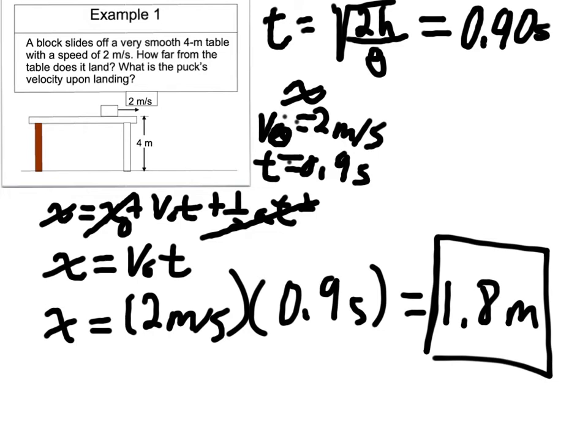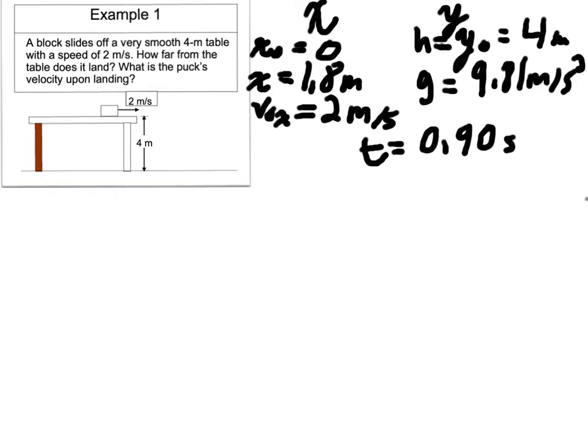Okay. Now we're ready to go for the second part. What is the puck's velocity upon landing? I'm going to clean up this slide so if you need to copy anything pause the video and do so. Alright. So here's what we now know. In x, x naught is 0, x final is 1.8 meters, v naught x is 2 meters per second, and in y our height equals y naught equals 4 meters high and g our acceleration is 9.81 meters per second squared and the time until the puck hits the ground is 0.9 seconds.